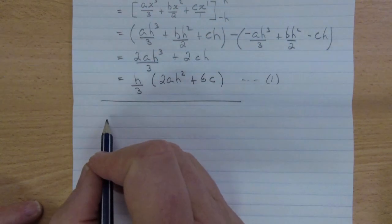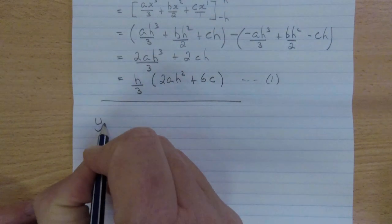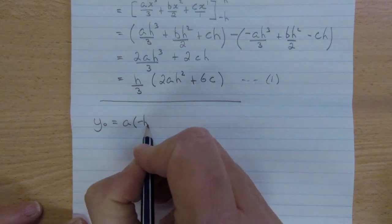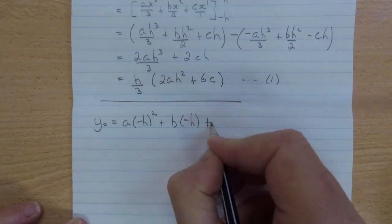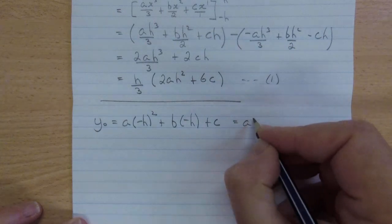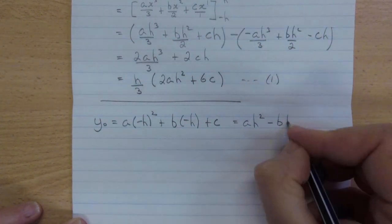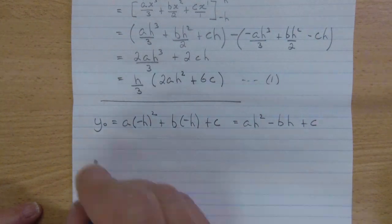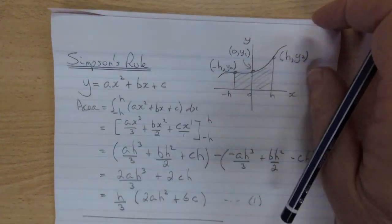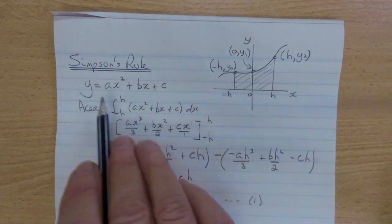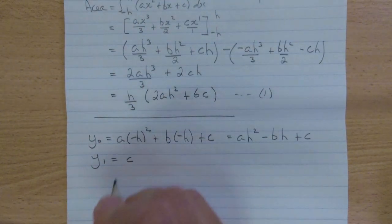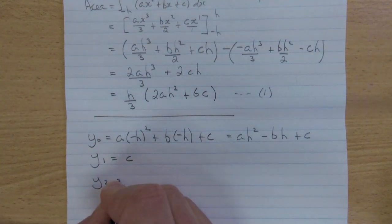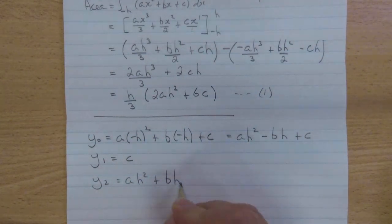So let's do it. Substituting our first point, I would have y0 equals a. Now, the x coordinate was negative h. So that's squared plus b times negative h plus c. That simplifies to a h squared minus b h plus c. The second point, where we had y1, the x coordinate was zero. So clearly the first two terms will be zeros. Literally, it's y1 equals c. That's handy. And y2, similar to the first, it'll be a h squared plus b h plus c.